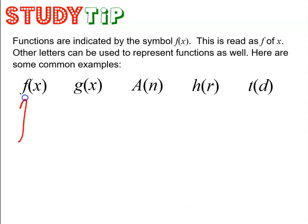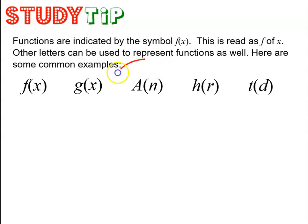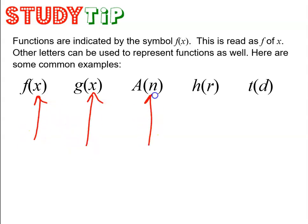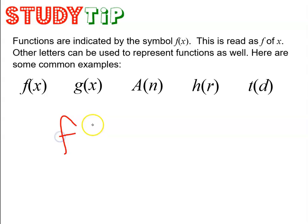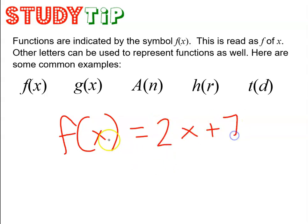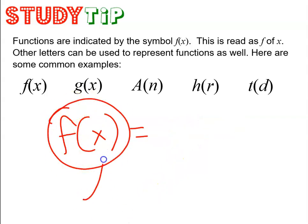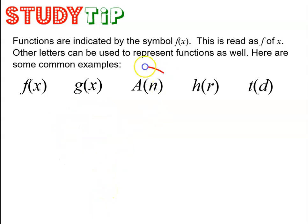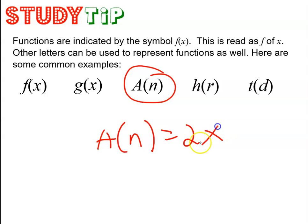It's important that you understand that the first letter out front is the name of the function. So if I say that I'm talking about function a, that would be whatever rule will come after that letter. The letter inside the parentheses is telling you what the input value represents. This variable has to match the variable in the rule, because this says I'm a function named f, and my input goes wherever the letter x is. So if I have a function named a and an input of n, the input has to be represented by the letter n.